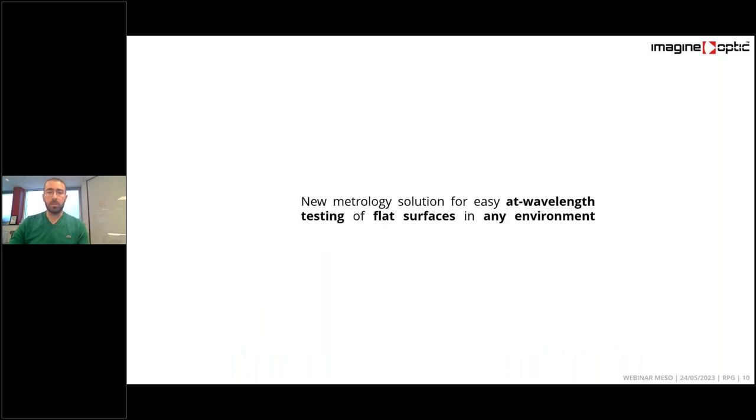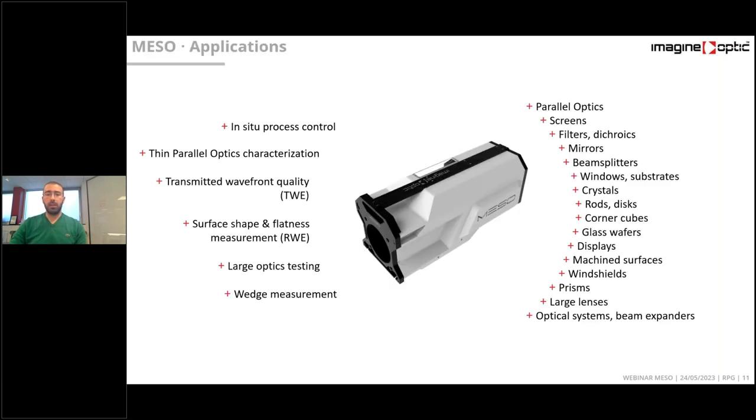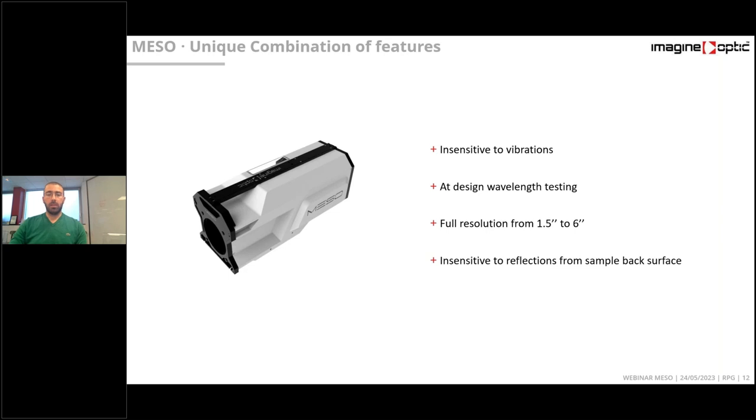So what is MESO? A new metrology solution for easy at-wavefront testing of flat surfaces in any environment and by any environment, we mean rough and complex environment, in particular production and manufacturing environments. What it's used for, MESO allows you to control your process in situ. Close to the production line, it is well suited for the characterization of plane parallel optics. It provides you with the same kind of information as a standard Fizeau interferometer. Transmitted wavefront and surface shape measured in reflection. And on the right side, you can see the typical samples you can test with MESO.